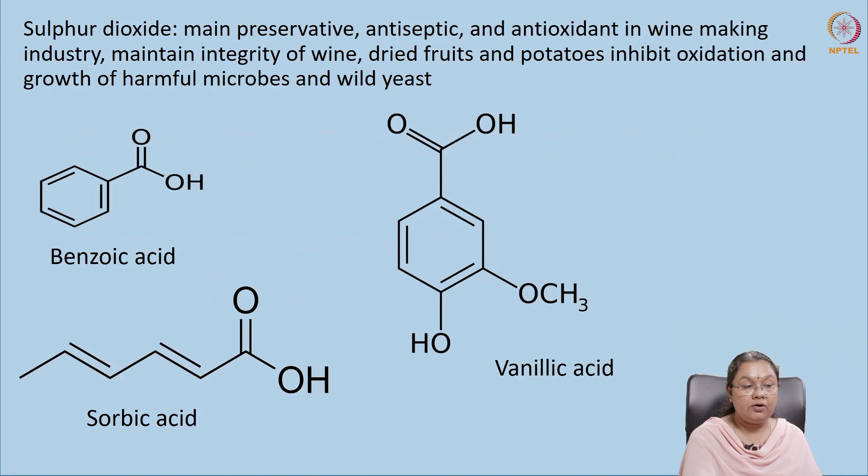Sulfur dioxide is another food preservative. It is used particularly in the beverage industry to extend the shelf life of wine, and is also used in the case of dried fruits and potatoes. These are some of the structures of preservatives shown here — benzoic acid, vanillic acid, and sorbic acid.